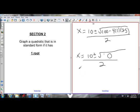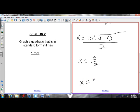So 100 minus 100 is 0. Square root of 0 is just 0. So the only root I have is x equals 10 over 2. x equals 5 is my only solution.